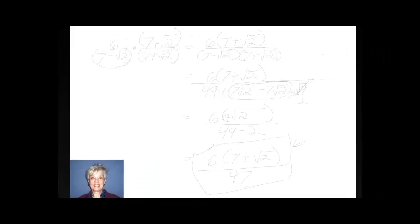Hi, this is your teacher Barbara Rademacher, and we're going to rationalize a denominator that has two terms. How about 6 over 7 minus the square root of 2? There's only one method that works here, and that is we have to multiply the denominator with two terms by its conjugate — that is, 7 plus the square root of 2 — and since we need to multiply by 1, the numerator and denominator must be exactly the same thing.